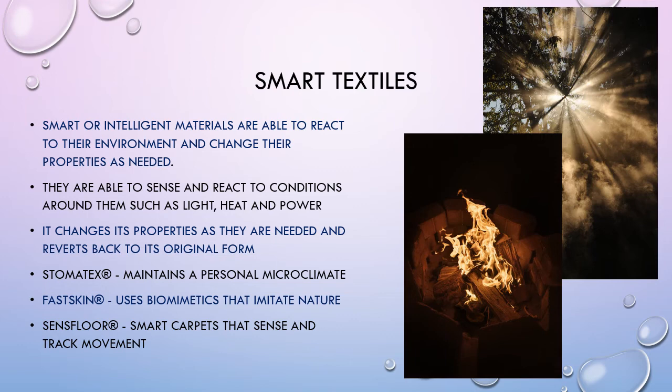Smart textiles, or intelligent materials, are those which are able to react to their environment and change their properties as needed. They can sense and react to conditions such as light, heat and power, changing properties as required before reverting to their original form. Examples include Stomatex, which maintains a personal microclimate for the wearer; Fastskin, which uses biomimetics that imitate nature — think of the Speedo swimming costumes; and Sensefloor, which are smart carpets that sense and track movement.